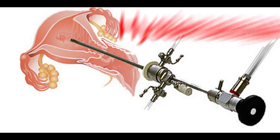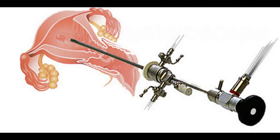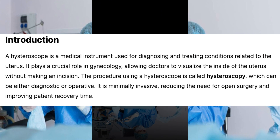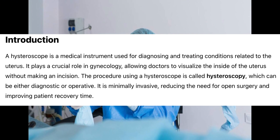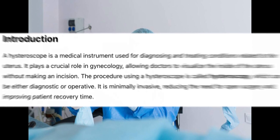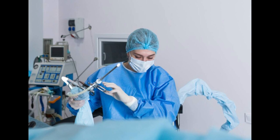Hysteroscope: a comprehensive guide. Introduction. A hysteroscope is a medical instrument used for diagnosing and treating conditions related to the uterus. It plays a crucial role in gynecology, allowing doctors to visualize the inside of the uterus without making an incision. The procedure using a hysteroscope is called hysteroscopy, which can be either diagnostic or operative. It is minimally invasive, reducing the need for open surgery and improving patient recovery time.